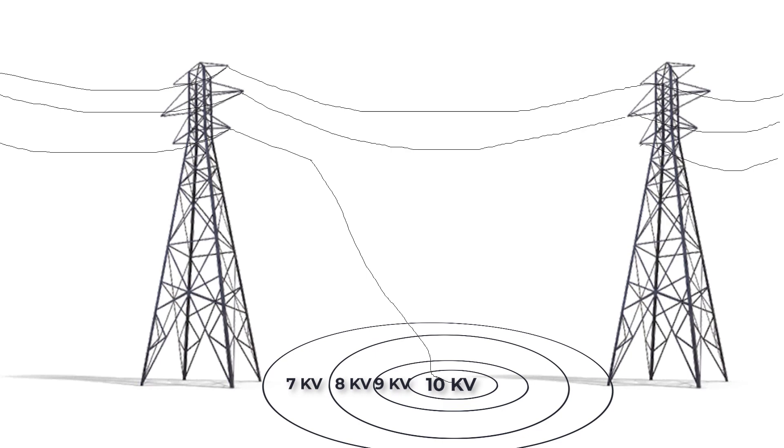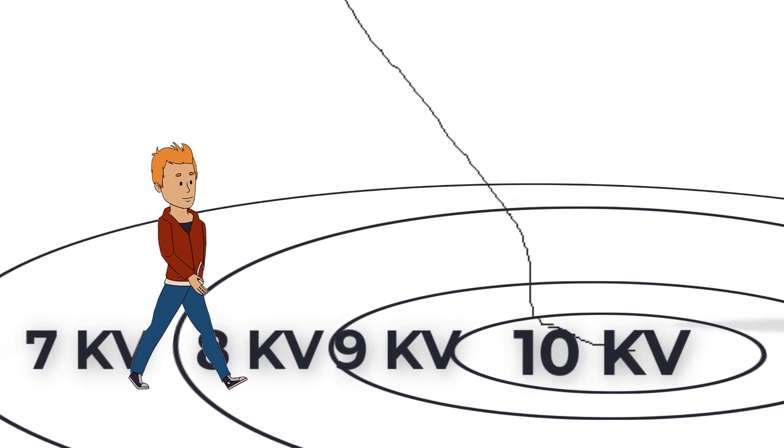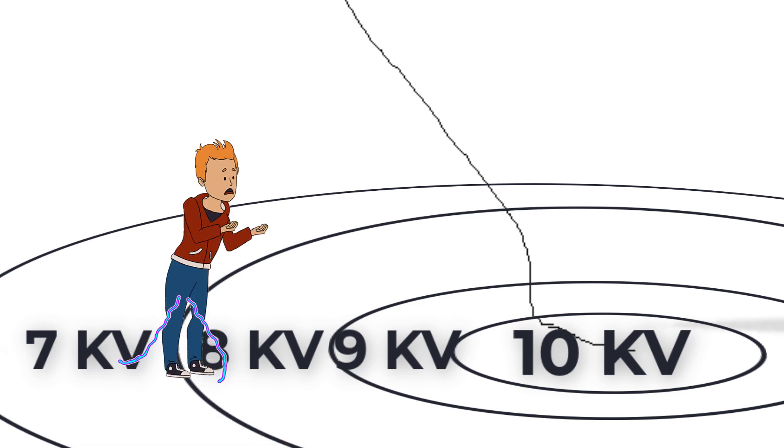If someone is trying to move inside the faulted area, he will be in a very serious situation. Any step this man takes will cause different potential values on his both legs. This potential difference will force the electrons to travel through his body from high potential point to low potential point, which will make this man experience a fatal electric shock.